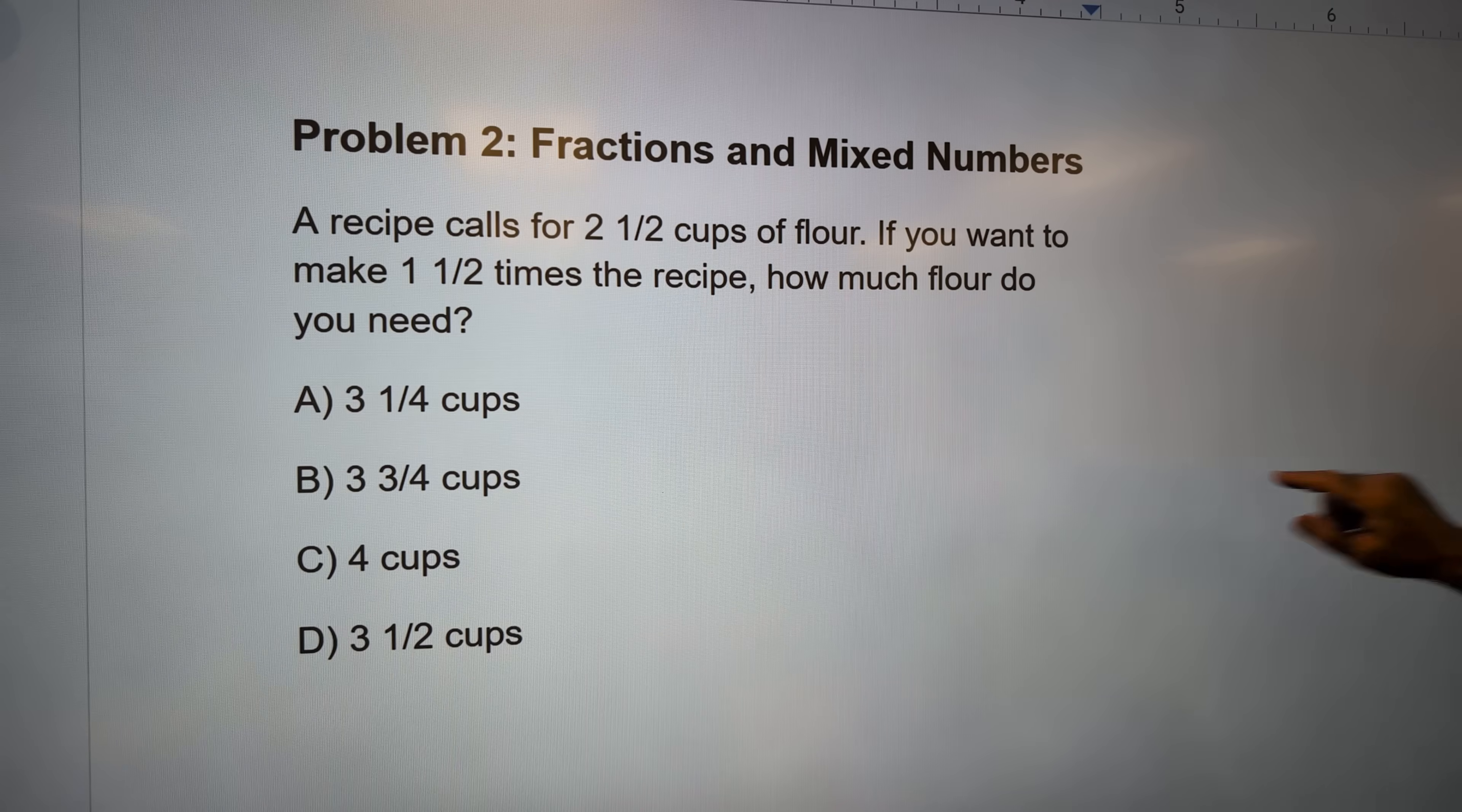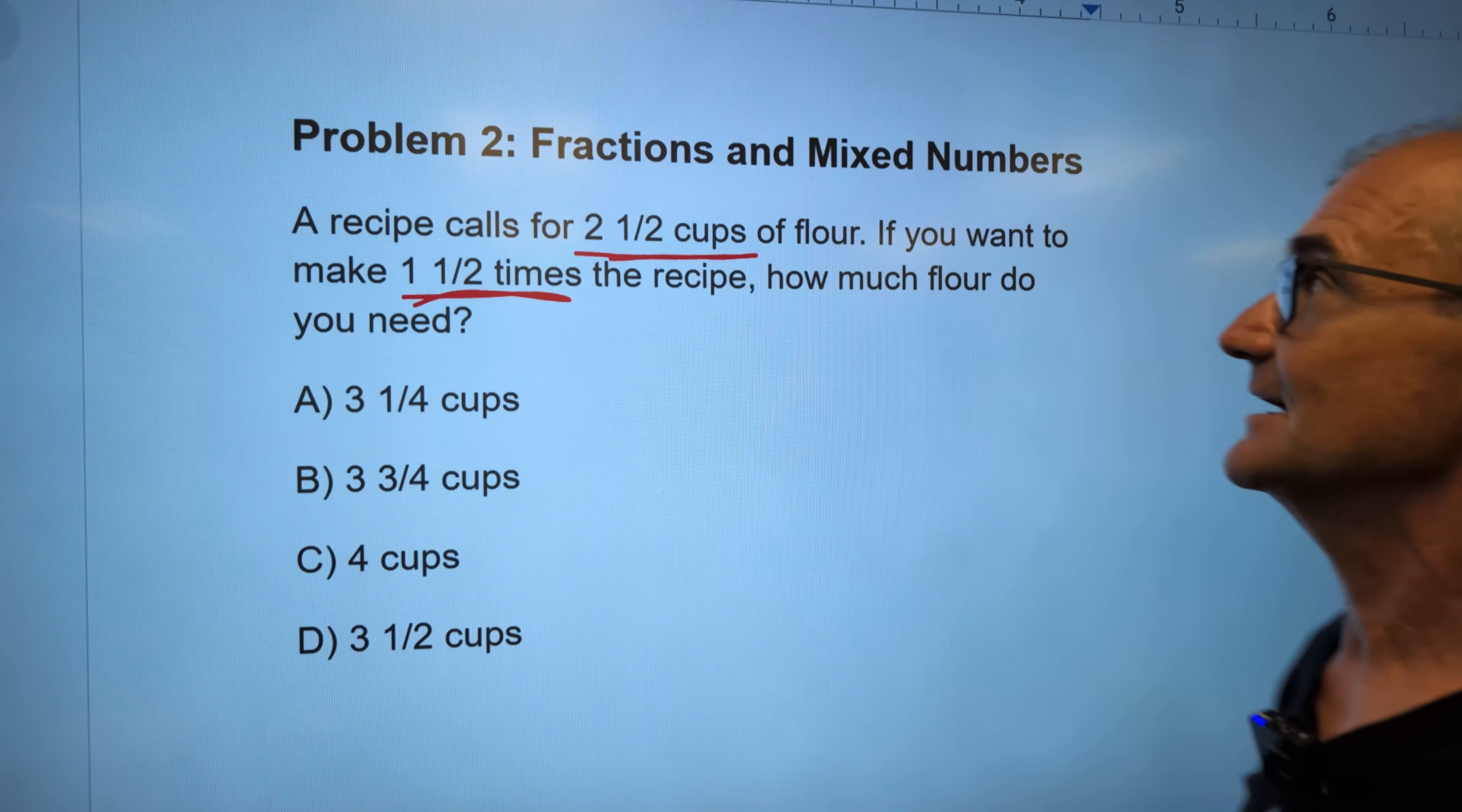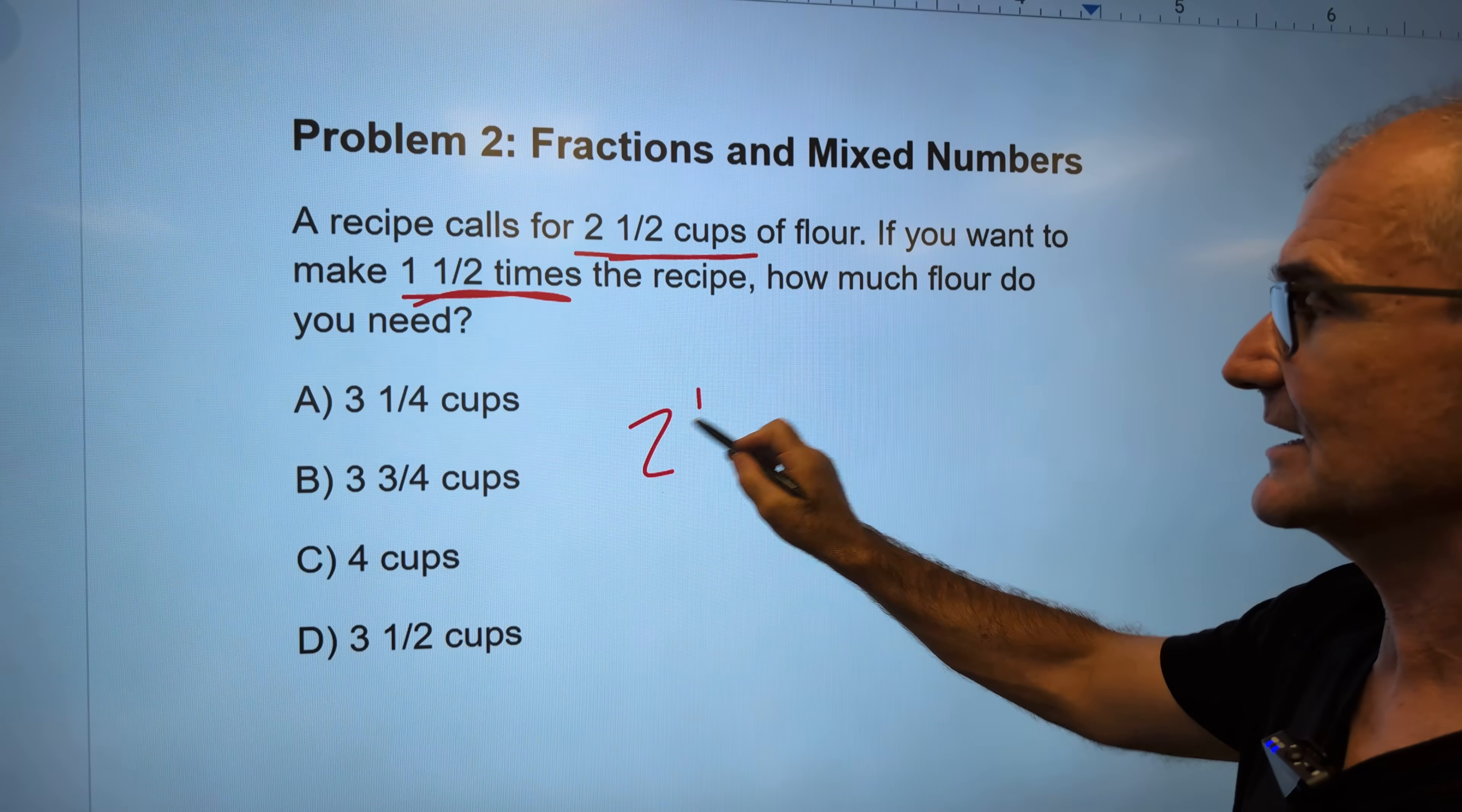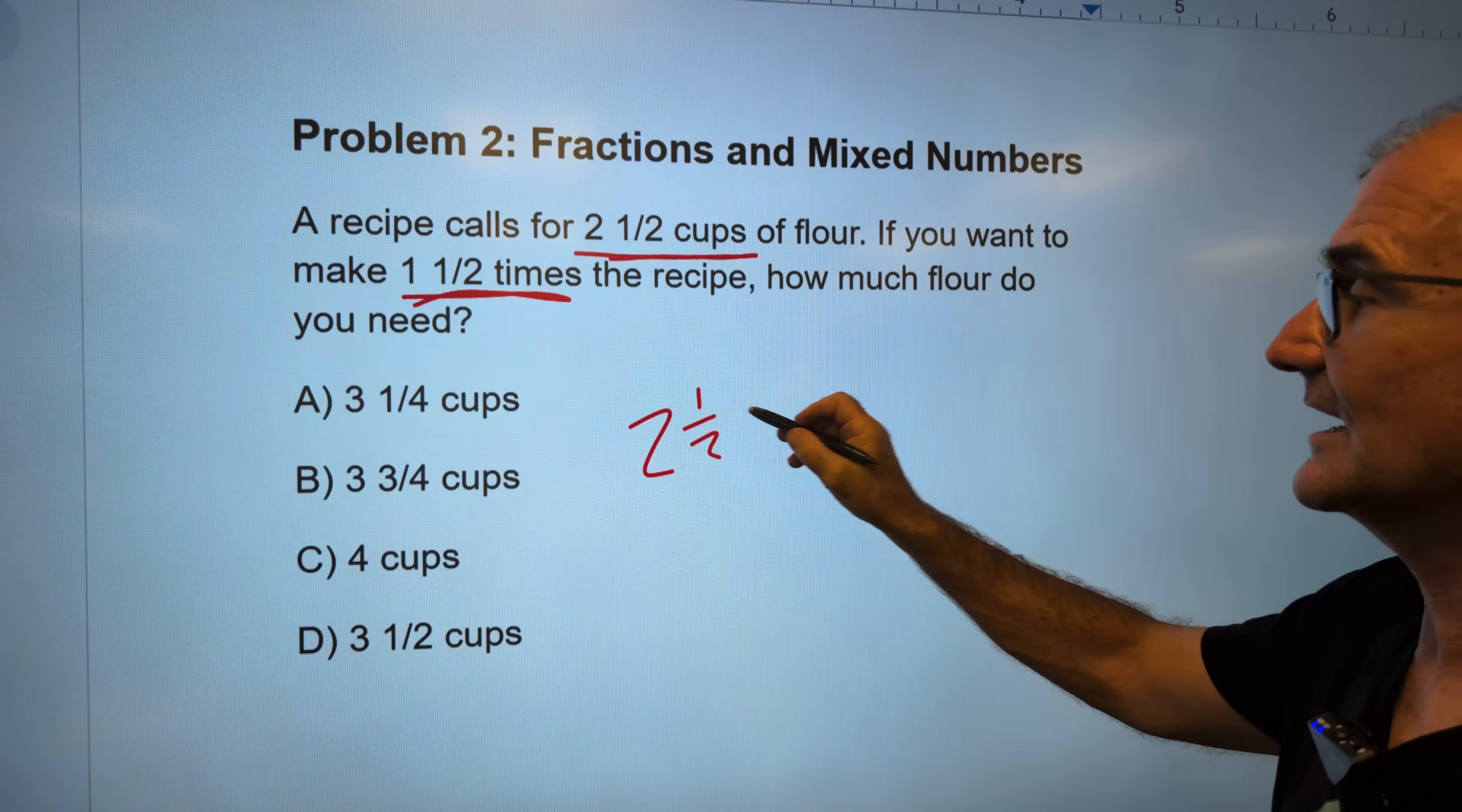All right, let's take a look at another problem. Problem number two, fractions and mixed numbers. So a recipe calls for 2½ cups of flour. You want to make 1½ times that. So you've got to take these mixed numbers and convert them into improper fractions. The way you do that is if I have 2½, I take that whole number, multiply it by that denominator and add the numerator.